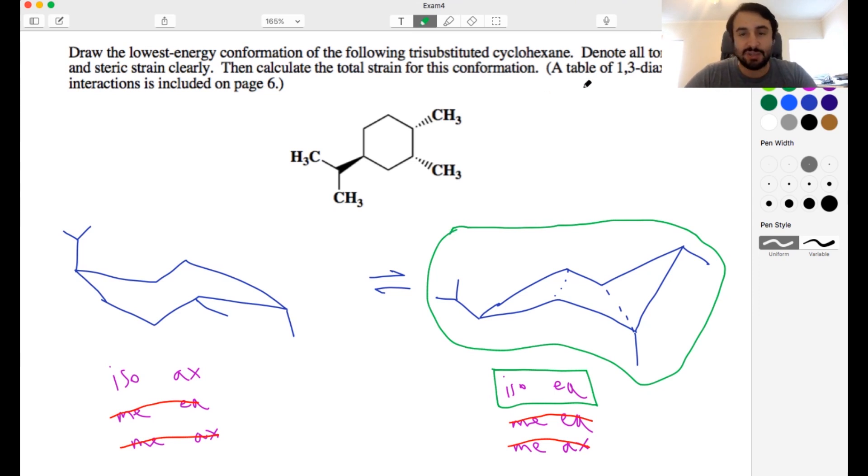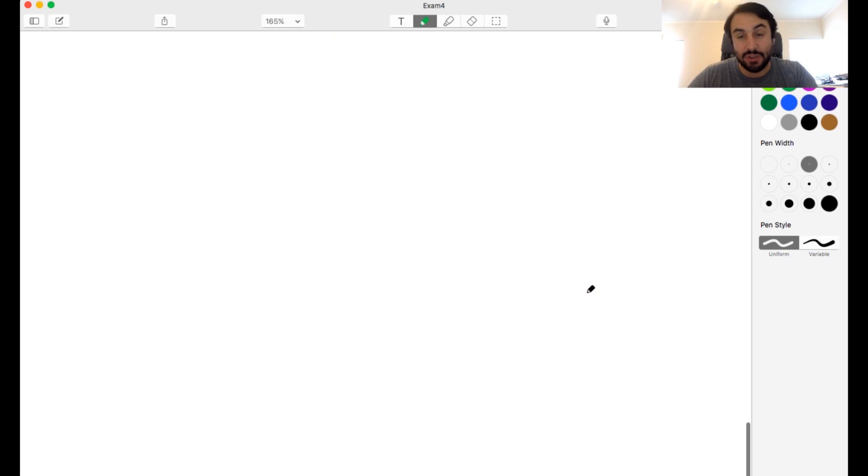And then if we wanted in this particular exam on the last page it included there's a table of quantitative diaxial interactions you just add them up. You just say we've got one methyl group in the axial position so you go get that number that would be the answer. So that's it for this exam.